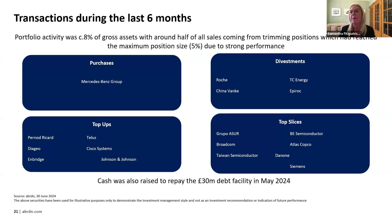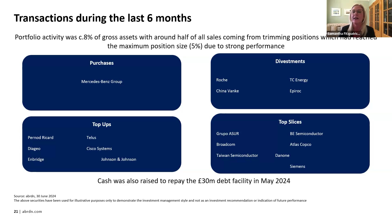TC Energy is a company which operates in Canada — it's a pipeline company. The switch from that into another name, Enbridge, was just a preference for that name, so we now have one company rather than two within that category. Epiroc is a name we sold for the right reasons — it's a Swedish company spun off from Atlas Copco a few years ago, producing mining equipment. It performed extremely well to the extent that the valuation in our view was looking quite expensive, and the dividend income from the stock was at the lower end of what we would deem acceptable for the trust.